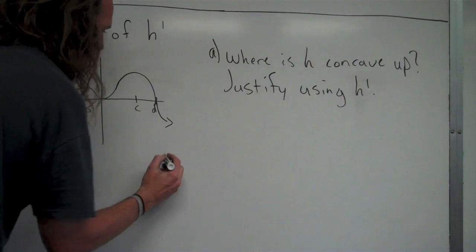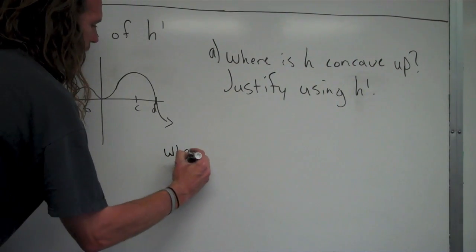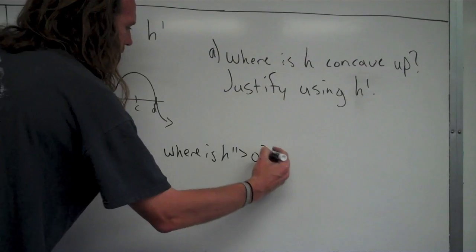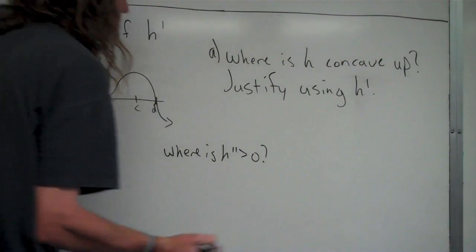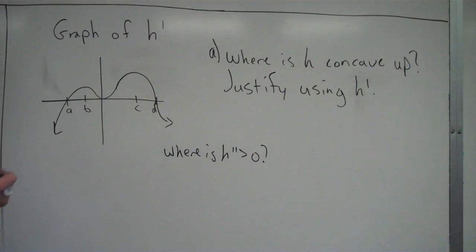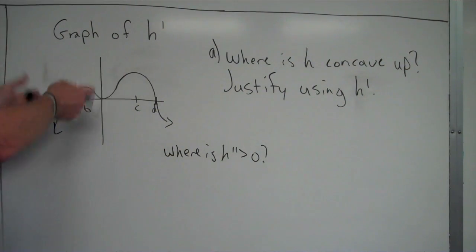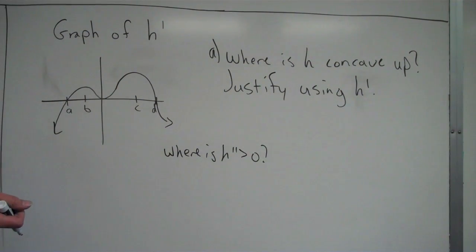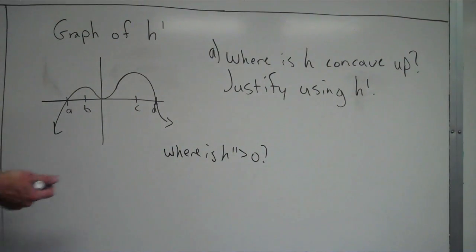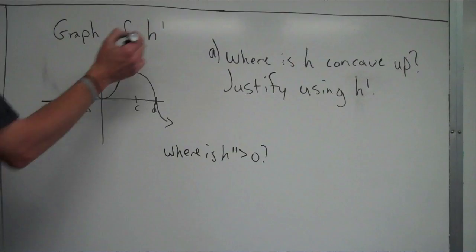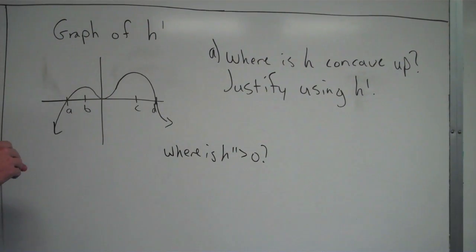So we're trying to find where H double prime is greater than zero — that's what we're trying to answer here. But again, we have a graph of H prime. So how do we get from H prime to figuring out where H double prime is greater than zero? Well, what we have to remember is that H double prime is the derivative of H prime.